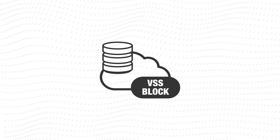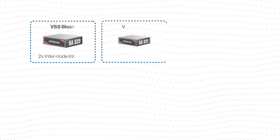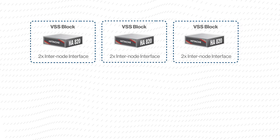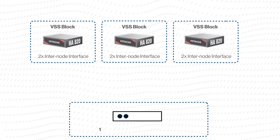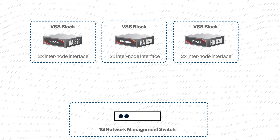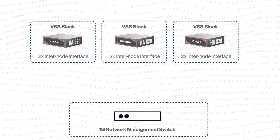Setting up VSS Block consists of 4 high-level steps. Before you begin, you need 3 general-purpose servers that are connected to a network management switch.